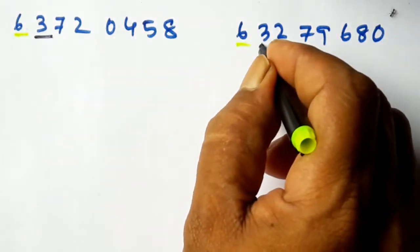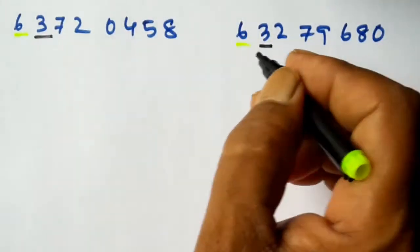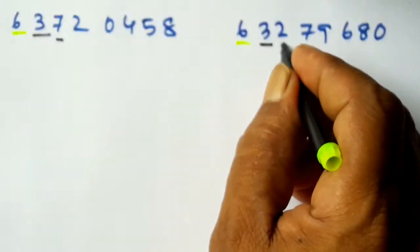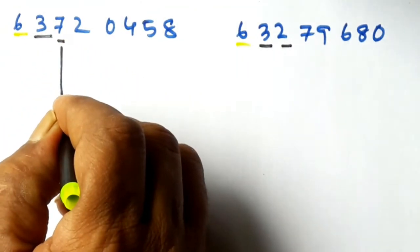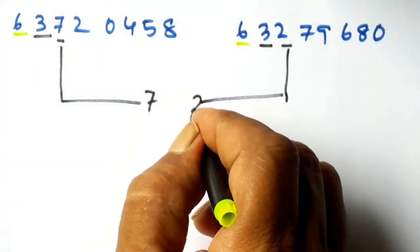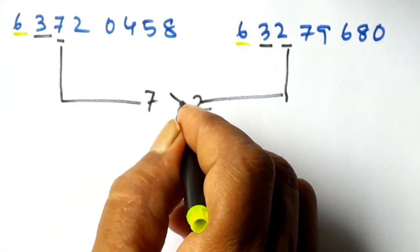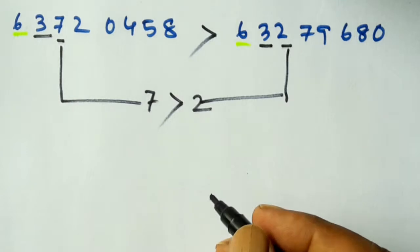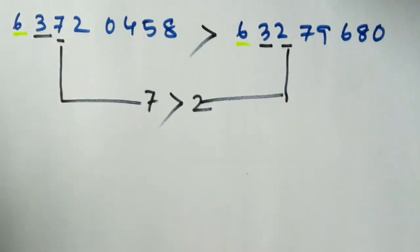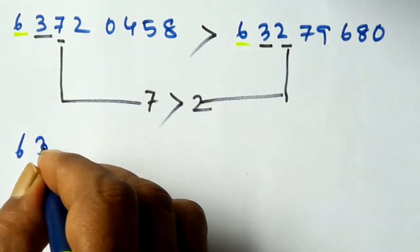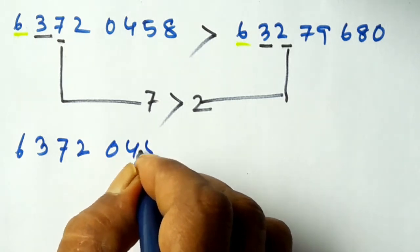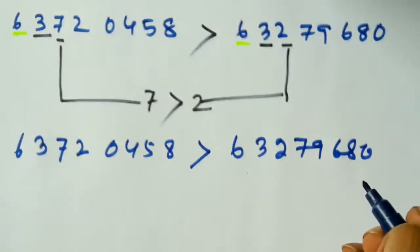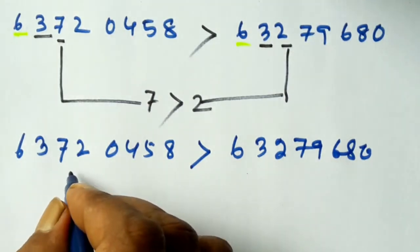Here also 3, and here also 3. The next number is 7, and here the next number is 2. Comparing 7 and 2 — 7 is greater than 2. So the first number is greater. We write: 63720458 is greater than 63279680. This is the smallest number and this is the larger number.